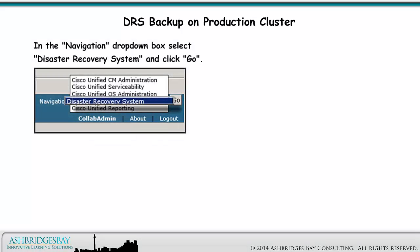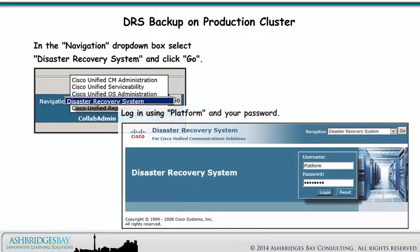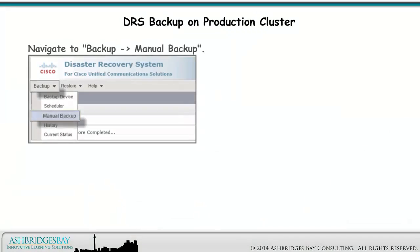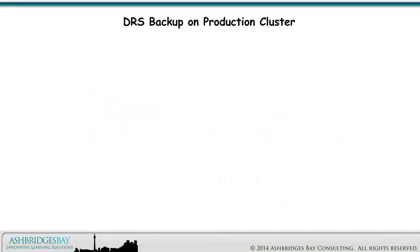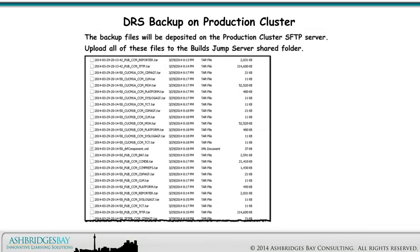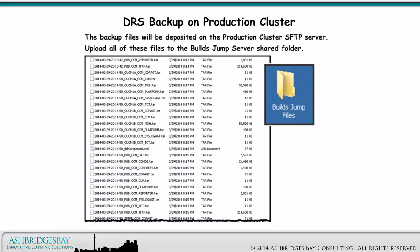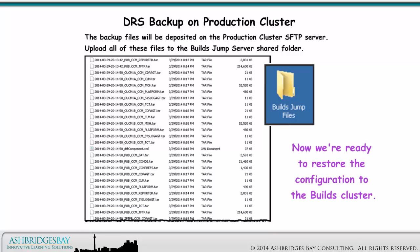In the Navigation drop-down box, select Disaster Recovery System and click Go. Log in using Platform and your password. Navigate to Backup, Manual Backup. Select Windows 2008 Server 1 and check the box beside CCM. Click on Start Backup. The backup files will be deposited on the Production Cluster SFTP Server. Upload all of these files to the BuildsJump Server shared folder. Now we're ready to restore the configuration to the Builds Cluster.